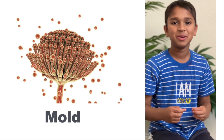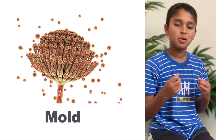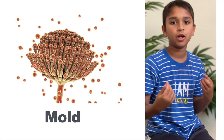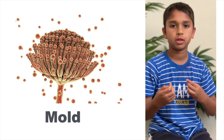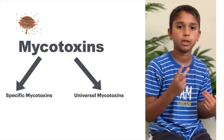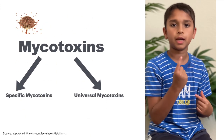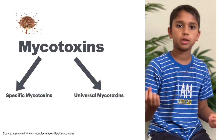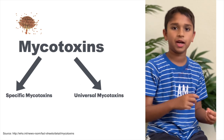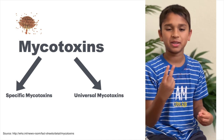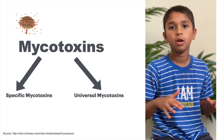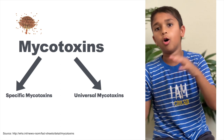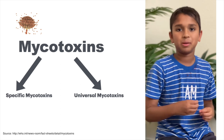One key thing to note is that all fungi produces a chemical called microtoxins. Microtoxins fall into two categories. One category is that they're specific to one type of fungi. The second category is that they're universal, found in all types of fungi.